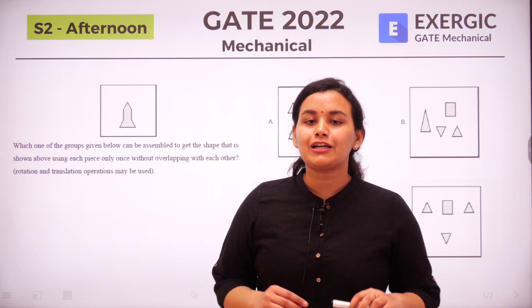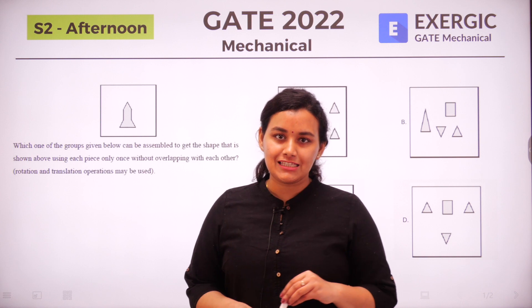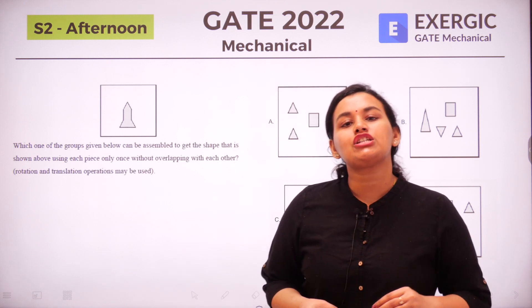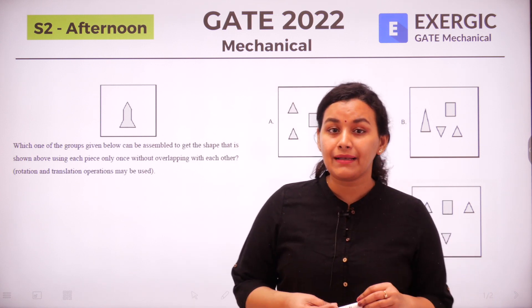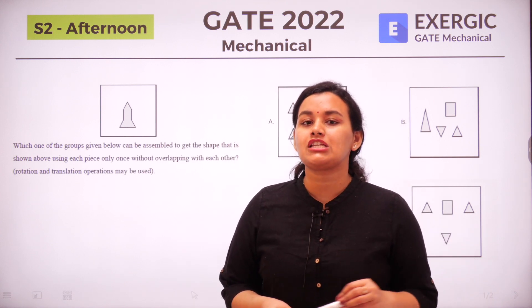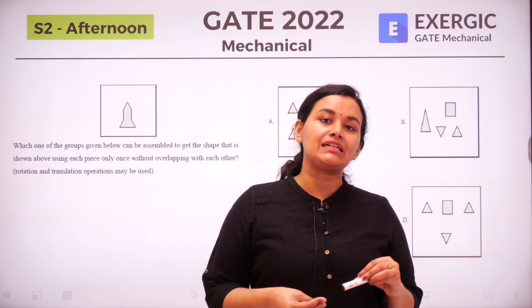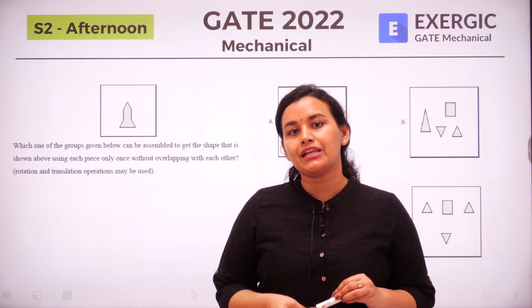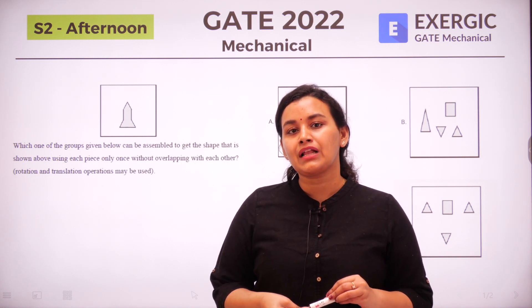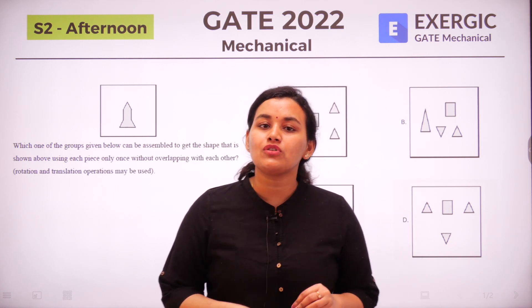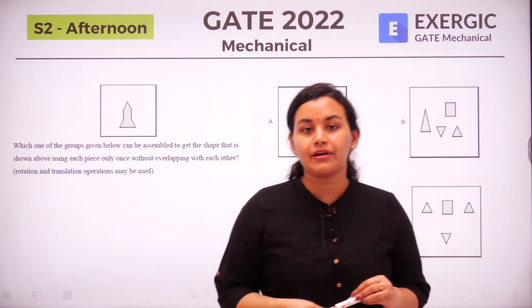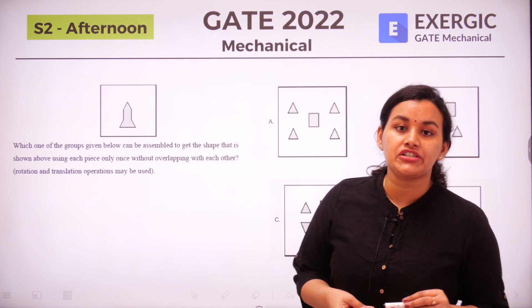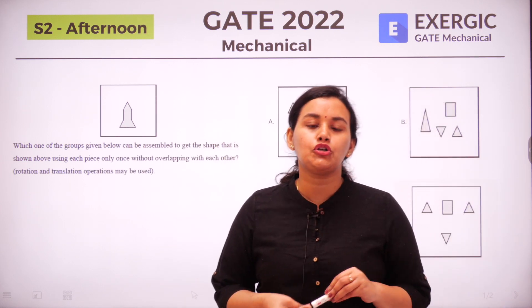Hello everyone, welcome to today's lesson. Let us look at this question of assembling spatial aptitude asked in the GATE 2022 examination. This question was asked in the mechanical engineering branch in the afternoon session, that is set 2.